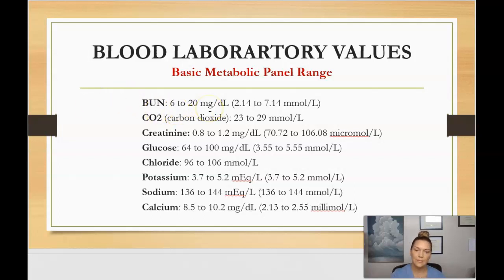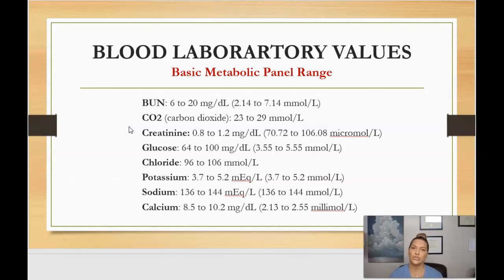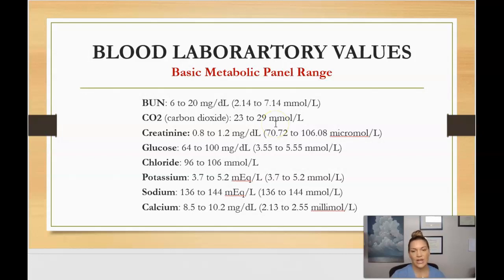BUN should be between 6 and 20. CO2, or carbon dioxide, should be between 23 and 29. Creatinine should be between 0.8 and 1.2. If your patient has chronic kidney disease, an acute kidney injury, polycystic kidney disease, or any other kidney issues, their BUN and creatinine will be watched very carefully. If creatinine is over 1.2, that's usually indicative of some sort of kidney injury.